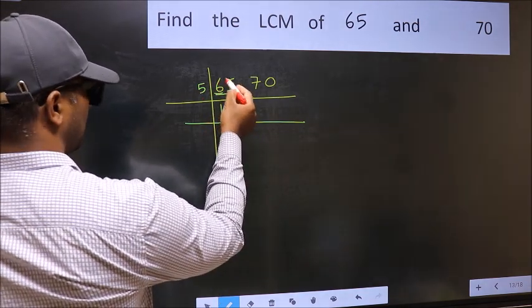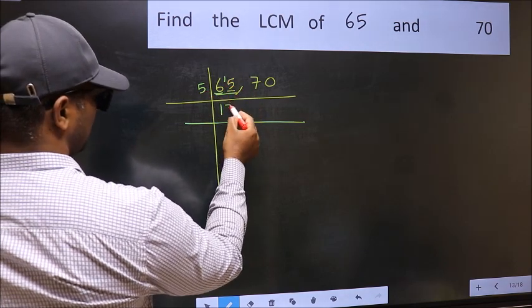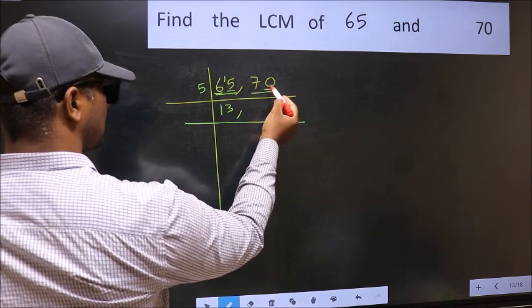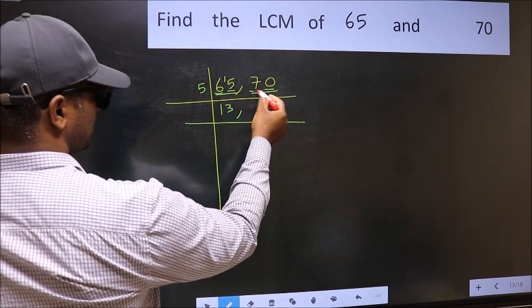6 minus 5 is 1. 1 carried forward gives 15. When do we get 15 in the 5 table? 5 times 3 is 15. The other number is 70. Last digit 0, so this is divisible by 5. First number 7.